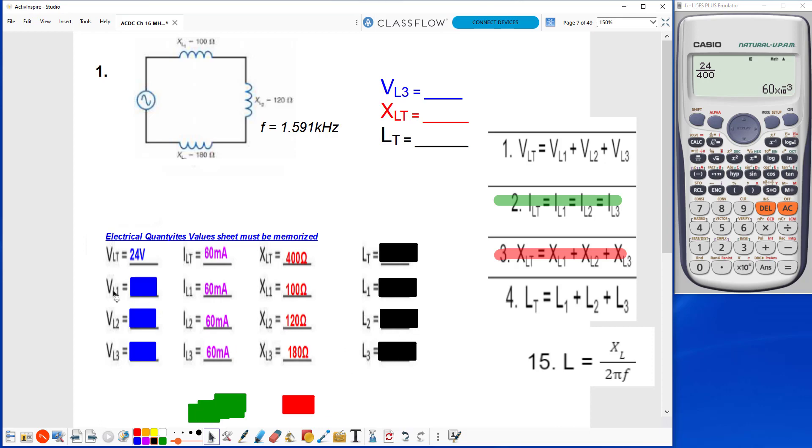Now I can use Ohm's Law to find the value of VL1. So VL1 is equal to IL1 times XL1. 60 milliamps times 100 gives me 6 volts. And the L stands for inductor.